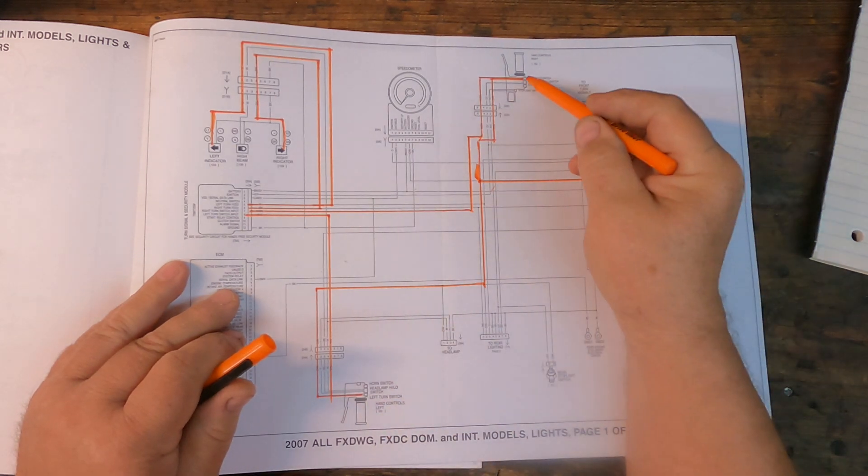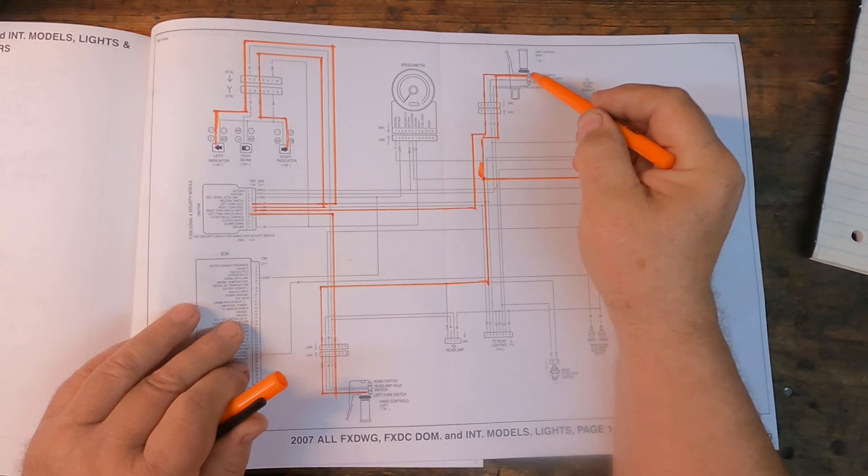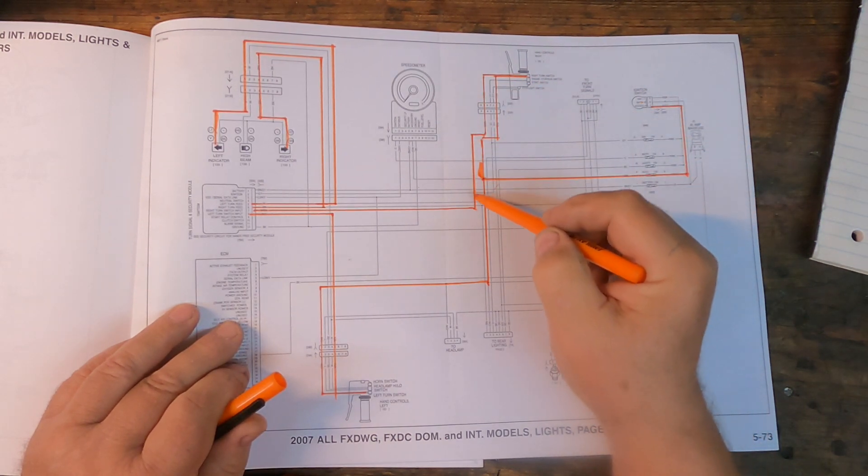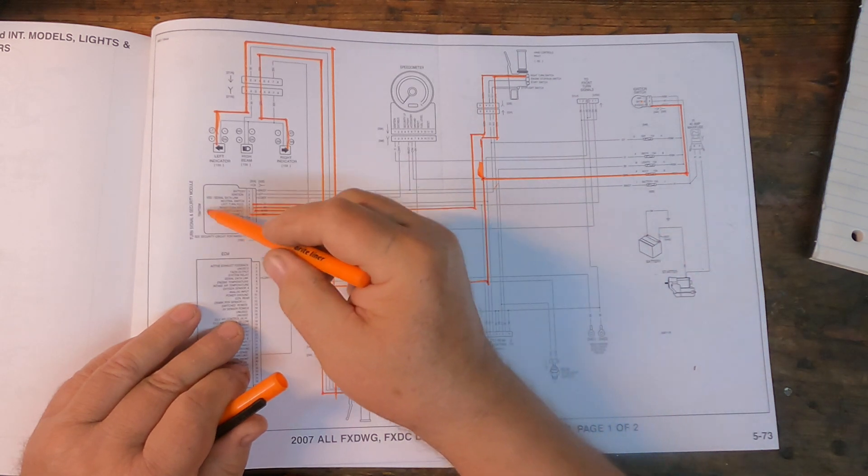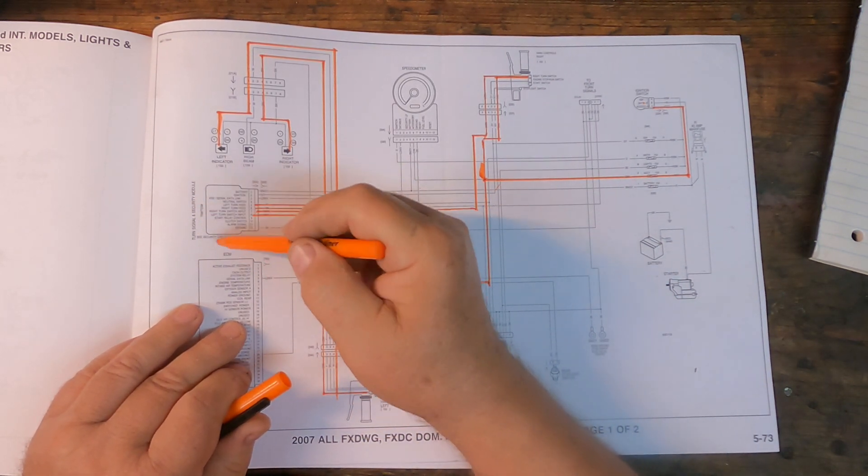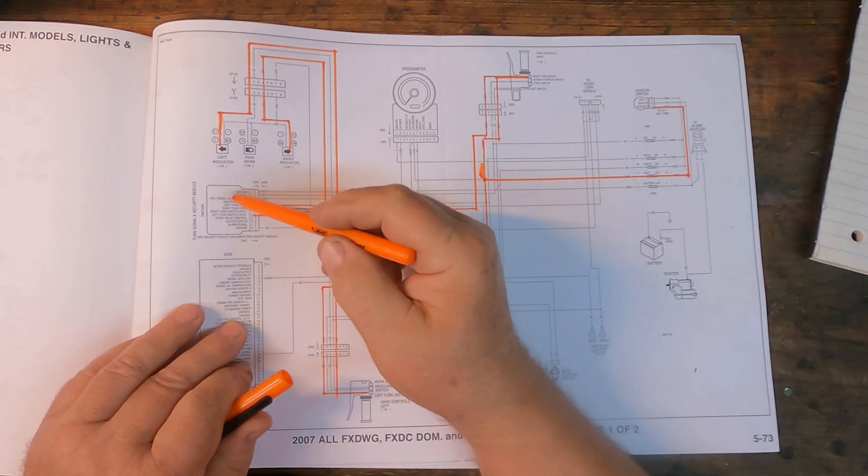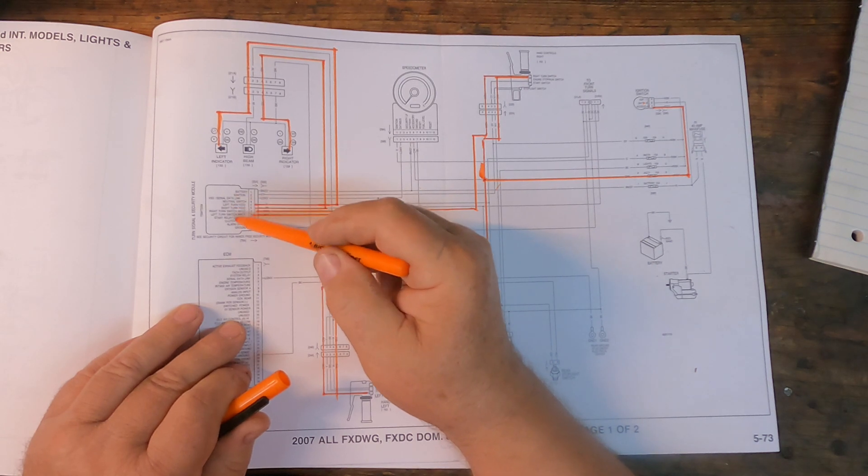But anyway, when you pushed that button, you completed the circuit on this wire. Electricity came out of the wire, went through this gadget. This is called the turn signal and security module. But really, this is nothing more than, well it's a little bit more than, but this is basically your old tungsten bimetallic flasher unit.